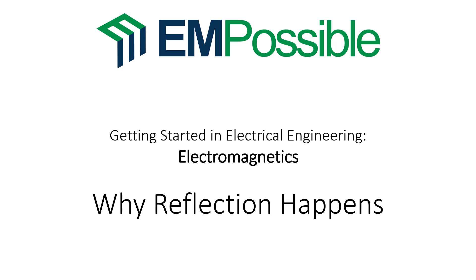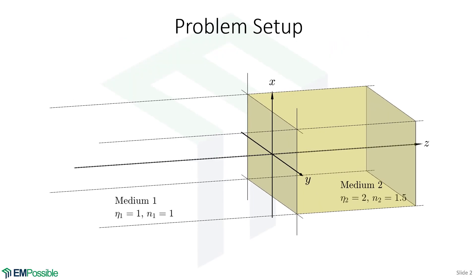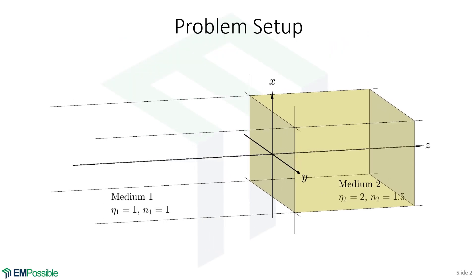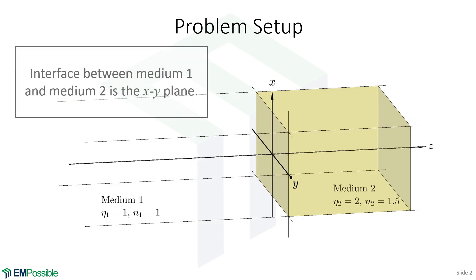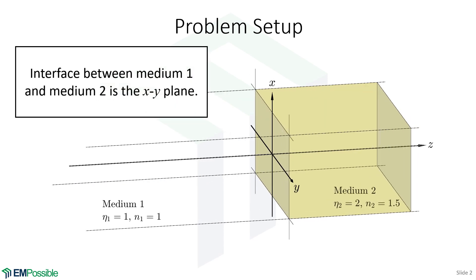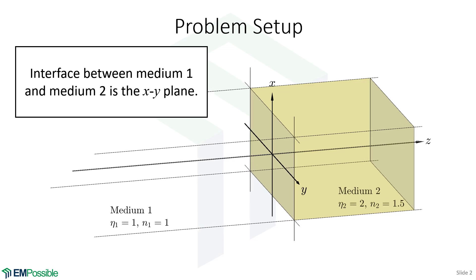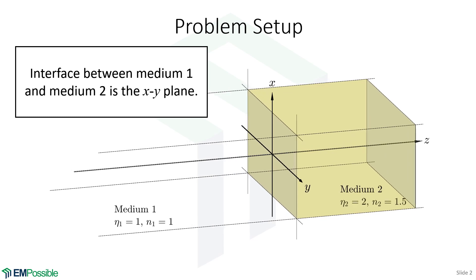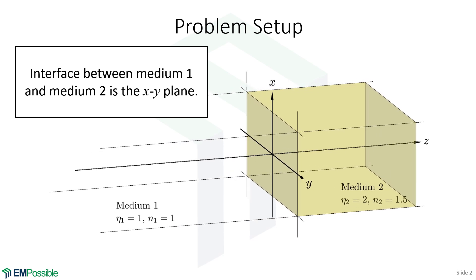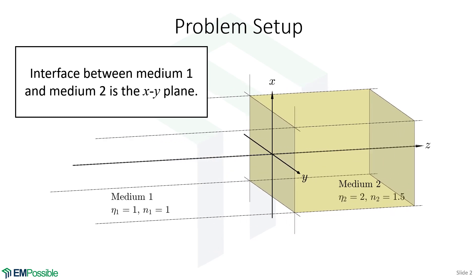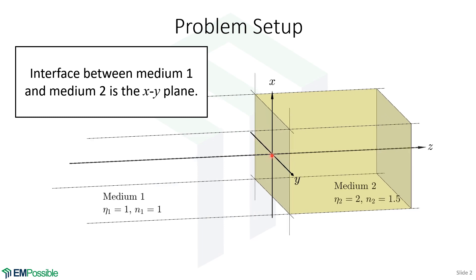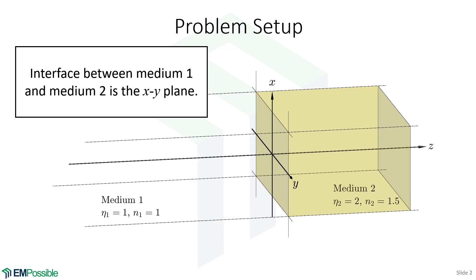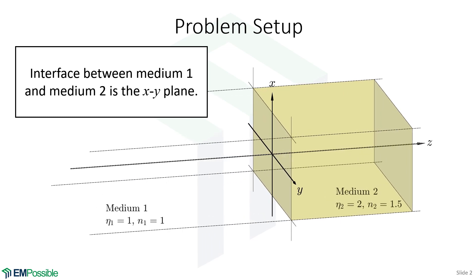Why reflection happens. The first thing we need to do is set up our problem. In this case, we're going to have two different mediums, and they will meet at the xy plane. So z equals zero at the interface between the two materials.